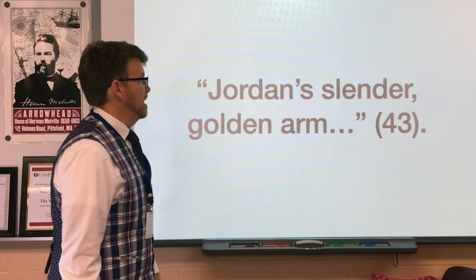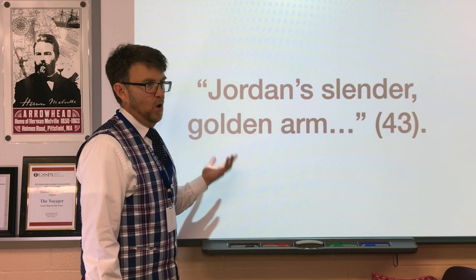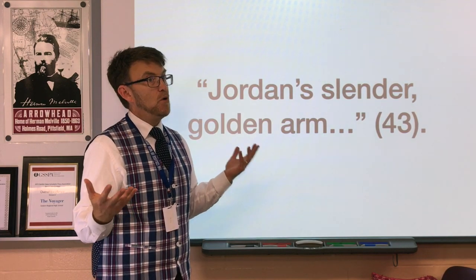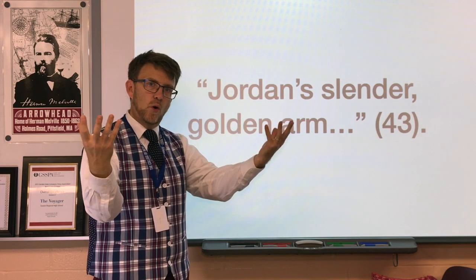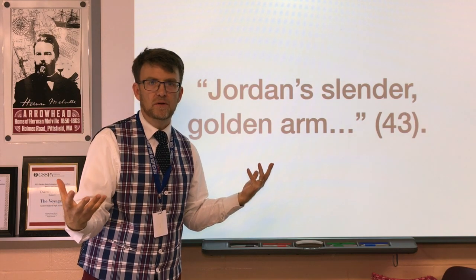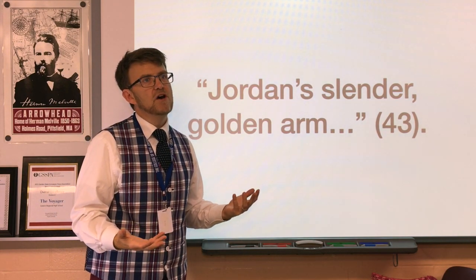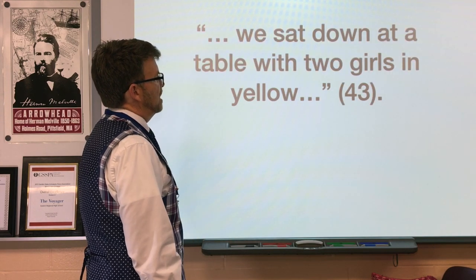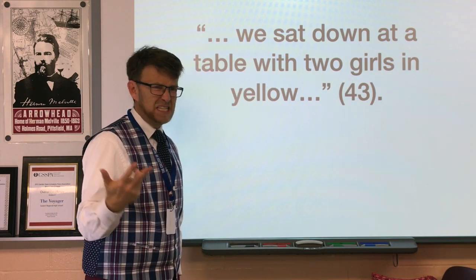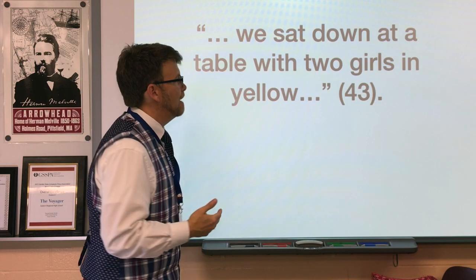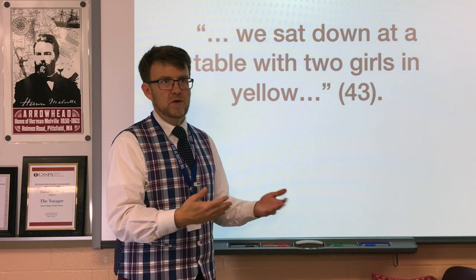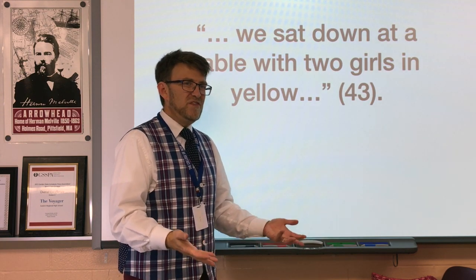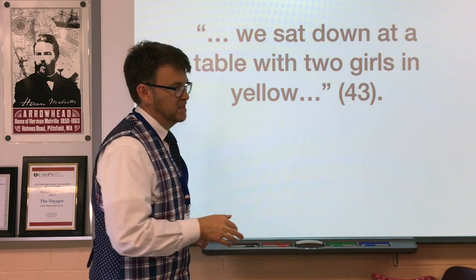Jordan's slender golden arm — even Jordan has a golden arm, because she's rich. The girls in the yellow cocktail dresses are part of this fake, impress-everyone culture — the golden people, the tanned people. It's all artificial, all gilded. We sat down at a table with two girls in yellow. These girls appear three times — I didn't realize it until I started doing this research. They're twins, not really individuals; they're the same type of person, as are most of the girls at this party, with the exception of Jordan, who has some of the best lines in this chapter.